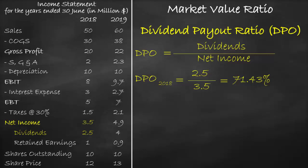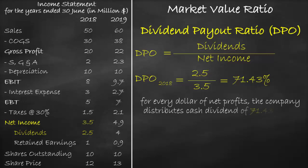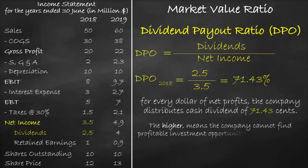This means that for every dollar of net profits, the company distributes cash dividends of 71.43 cents. A higher dividend payout ratio means that a company cannot find a profitable investment opportunity — it is a sign of a mature company.